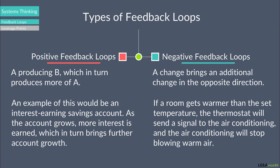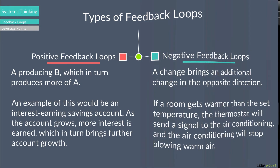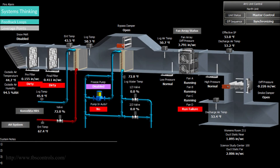However, if the positive feedback loops are checked with the negative feedback loops, the system can stop if there is too much of something. With the current technology, both feedback loops can be implemented by the use of sensors, controls, building automation systems, and more.